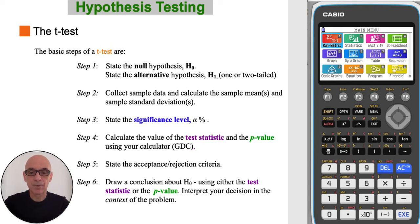Step four, to calculate the value of the test statistic and the p-value. Step five, to state the acceptance and rejection criteria. And step six, to draw a conclusion, either using the test statistic or the p-value.